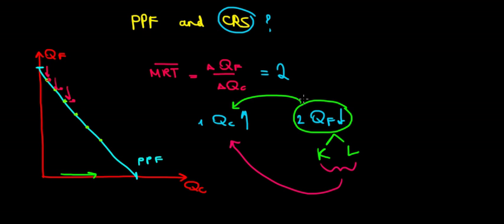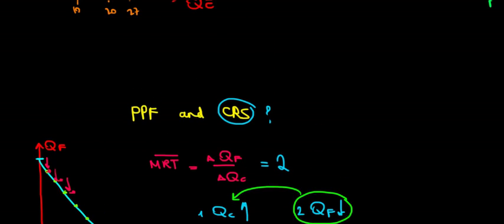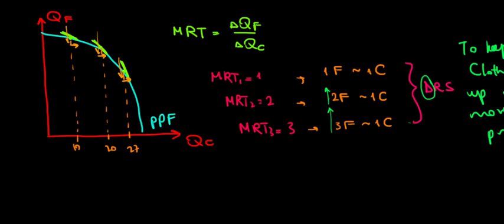And to understand it even better, always contrast it with the opposite case, with the decreasing returns to scale. Recall that in decreasing returns to scale, this is not the case. In decreasing returns to scale, we saw that it's becoming less and less efficient. It's harder and harder to keep producing clothing. So that's why we must give up more and more food. That's why the slopes are becoming larger and larger.